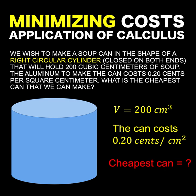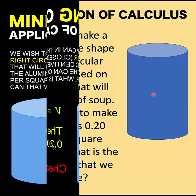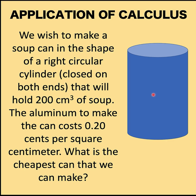Hi everyone, here's our math problem for today. We wish to make a soup can in the shape of a right circular cylinder closed on both ends that will hold 200 cubic centimeters of soup. The aluminum to make the can costs 0.20 cents per square centimeter. What is the cheapest can that we can make given this situation?